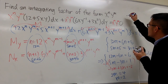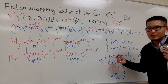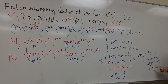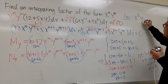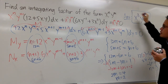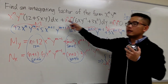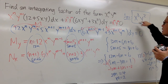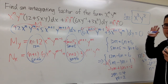So m is 2 and n is 3. The special integrating factor is x to the third power times y squared. This is what we multiply the original equation by so that it becomes exact. I'm just showing you how to find this kind of special integrating factor.